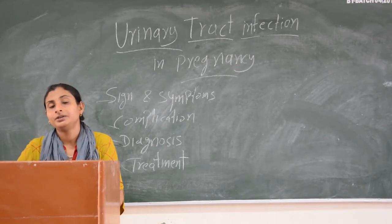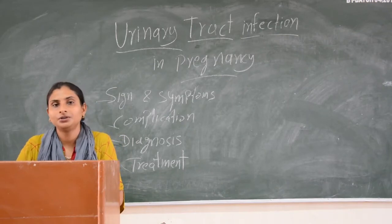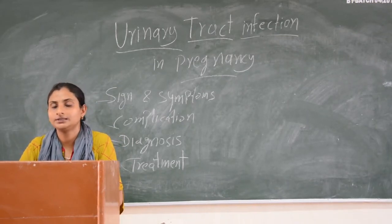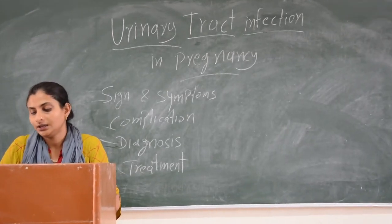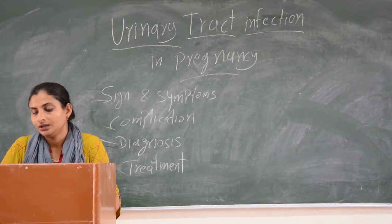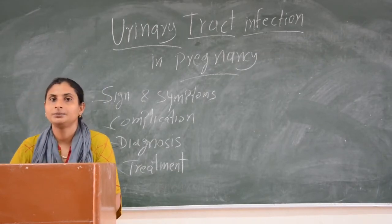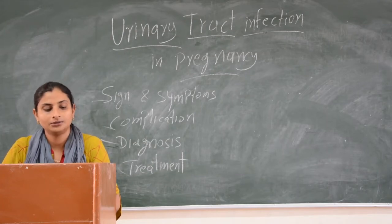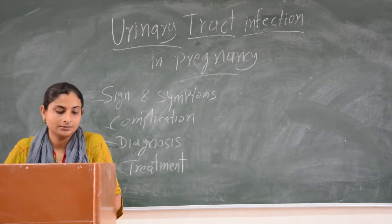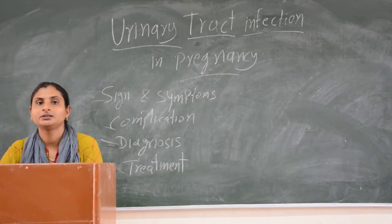For prevention in pregnancy, we can start prophylaxis. Antibiotic prophylaxis can be started during pregnancy using nitrofurantoin, cephalexin, or amoxicillin. We have now studied urinary tract infection in pregnancy — its causes, symptoms, complications, diagnosis, and treatment.